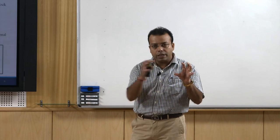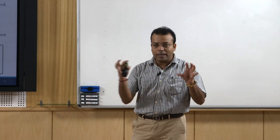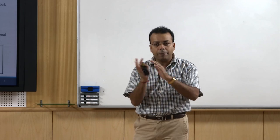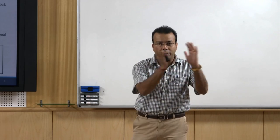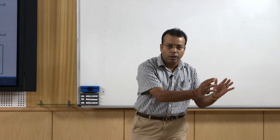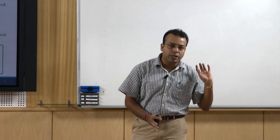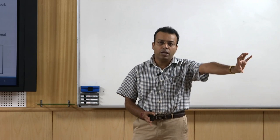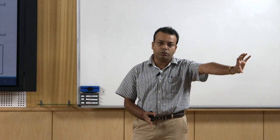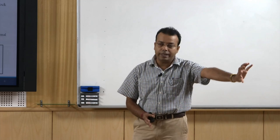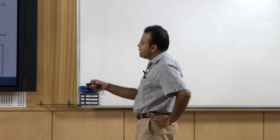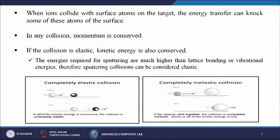One ball hits another ball: whatever kinetic energy the first had, the same kinetic energy is transferred to the second ball, and the second ball achieves that kinetic energy and hits the substrate itself. Here are examples where we get completely elastic collisions and where we get completely inelastic collisions.